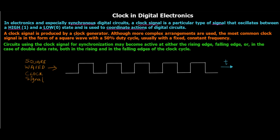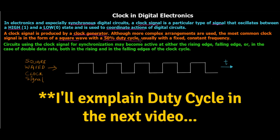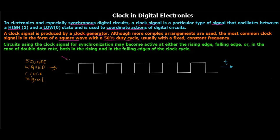A clock signal is produced by a clock generator. So it is a separate circuit which generates these signals. Now although more complex arrangements are used the most common clock signal is in the form of square wave with 50% duty cycle. So I'll explain to you what 50% duty cycle is and a square wave is something like this which I've already drawn over here. So this is an illustration of what a square wave looks like and it is usually having a fixed and constant frequency.